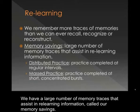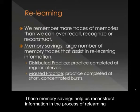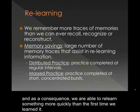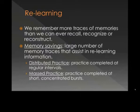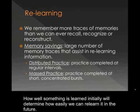We have a large number of memory traces that assist in relearning information, called our memory savings. These memory savings help us reconstruct information in the process of relearning, and as a consequence, we are able to relearn something more quickly than the first time we learned it. How well something is learned initially will determine how easily we can relearn it in the future.